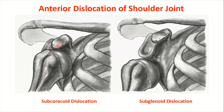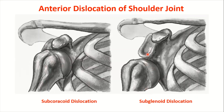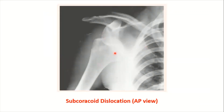This is the coracoid process, this is the shoulder joint, and you can see the head of the humerus — the glenohumeral joint — in subcoracoid dislocation, going below the coracoid process. An example is a backstroke swimmer colliding with the end of the pool. The person cannot use the arm and usually supports it with the other hand. You can also see a radiograph of the subcoracoid dislocation — this is the acromion, this is the head of the humerus, and this is the glenoid cavity — demonstrating the subcoracoid dislocation of the shoulder joint.